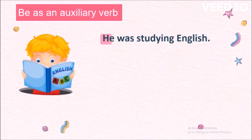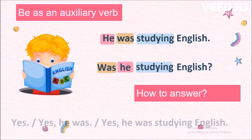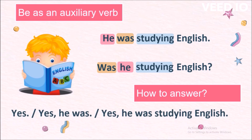He was studying English. To form the question, we change the word order of the subject and the helping verb: Was he studying English? First the helping verb, then the subject, then the main verb, and the rest of the sentence. How to answer: yes, or yes he was, or yes he was studying English.